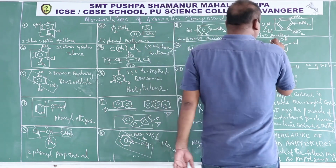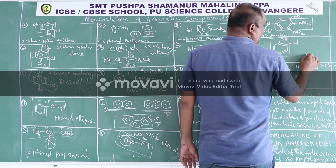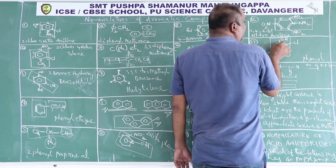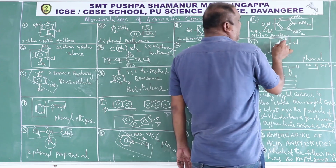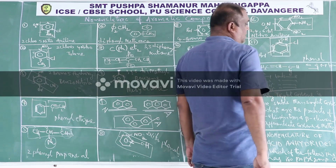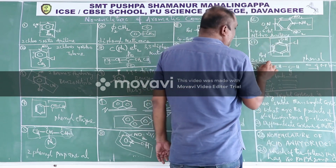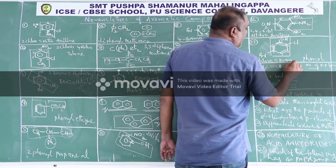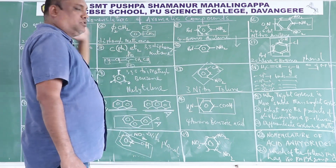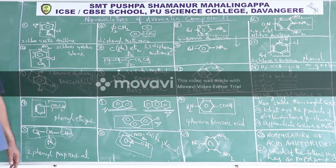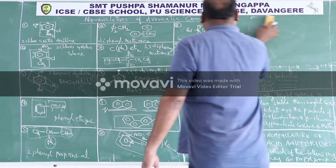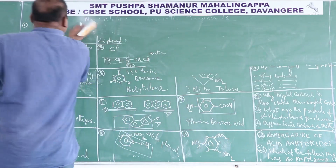Here the base compound is phenol. The phenolic carbon is number 1, and numbering is done so the immediate next substituent gets the lowest number: 2, 3, 4, 5, 6. Therefore the IUPAC name is 2-chloro-5-bromophenol. This completes the nomenclature of aromatic compounds.